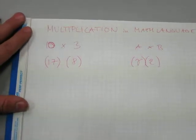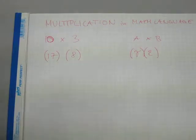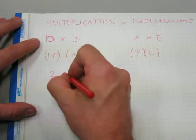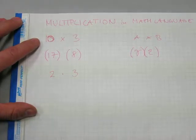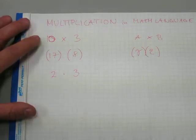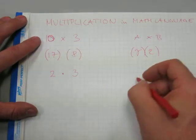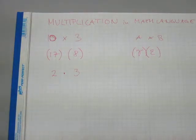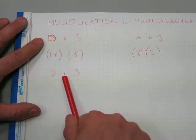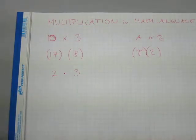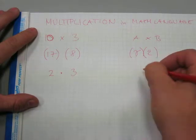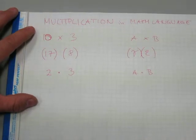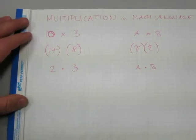A third way to write multiplication is with a dot. For example, you can write two times three or two by three with a dot at mid-height. This is not a decimal—it's not two point three, it's two times three, because the dot appears at mid-height, not in the lower corner where decimal dots normally are. With letters it would be A times B with the same dot appearing at mid-height.